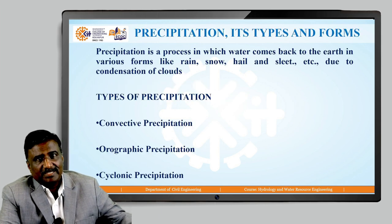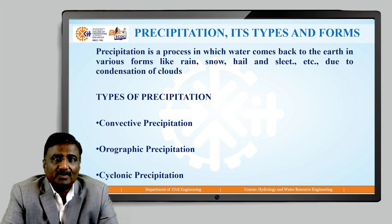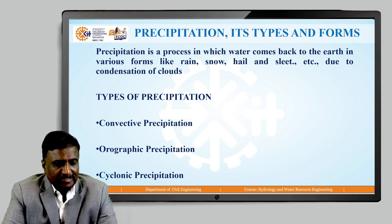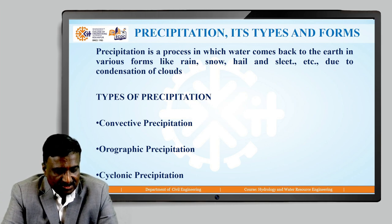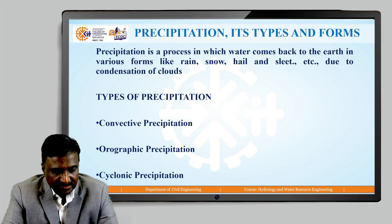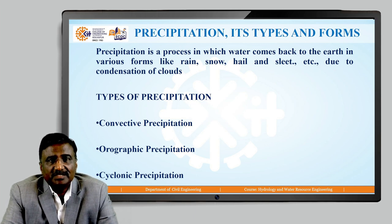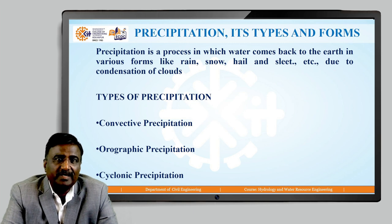First let us see what is precipitation and types of precipitation. Precipitation is a process in which water comes back to the earth in various forms like rain, snow, hail, sleet, etc., due to condensation of clouds. This is the meaning and definition of precipitation.